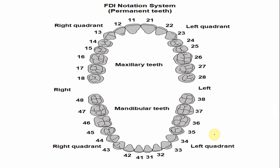In the FDI notation system, the number of the left mandibular second premolar is 35 — where three denotes the left mandibular quadrant and five is the tooth number.